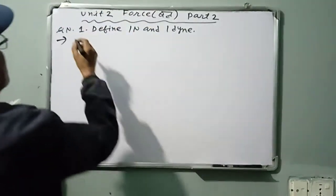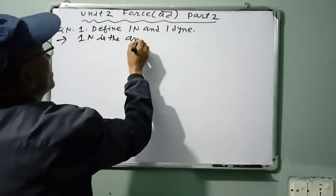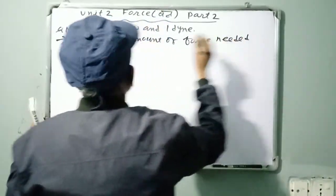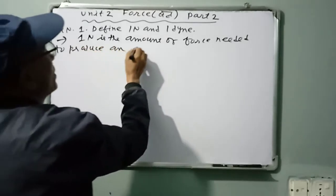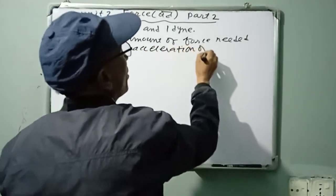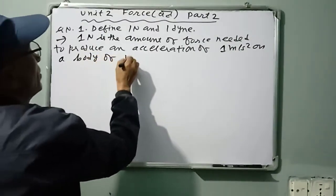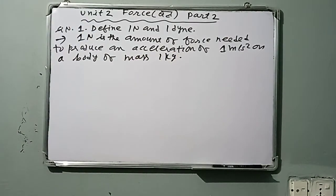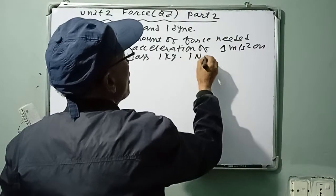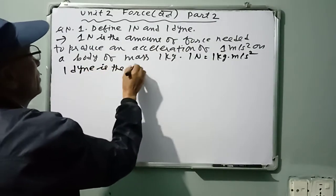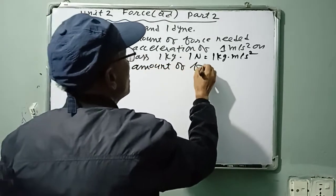One Newton is the amount of force needed to produce an acceleration of one meter per second squared on a body of mass one kilogram.